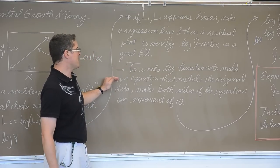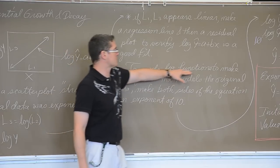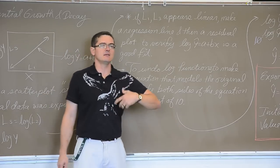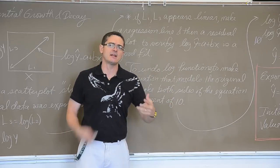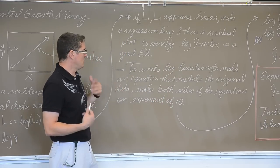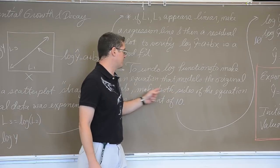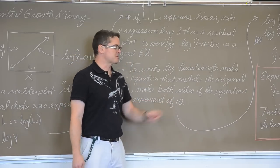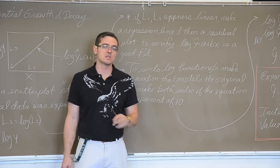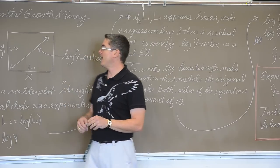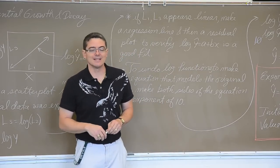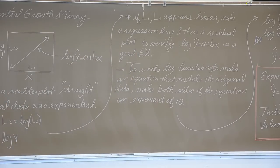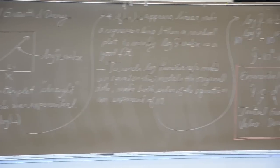So to undo a log transformation, make an equation that models, we're going to undo the log transformation to make an equation that models the original data. Something that maybe if you're a statistician, someone probably gave you data to analyze, and you're giving them something back, and you want to make something friendly for them to use. So we want to make a model that fits the original data, and we're going to do that by making both sides of the equation an exponent of 10, and I will explain why at the end of this video you would want to do that. So let's get the log out of our equation that fits our linear transformed data. Let's make a model that fits the original graph.